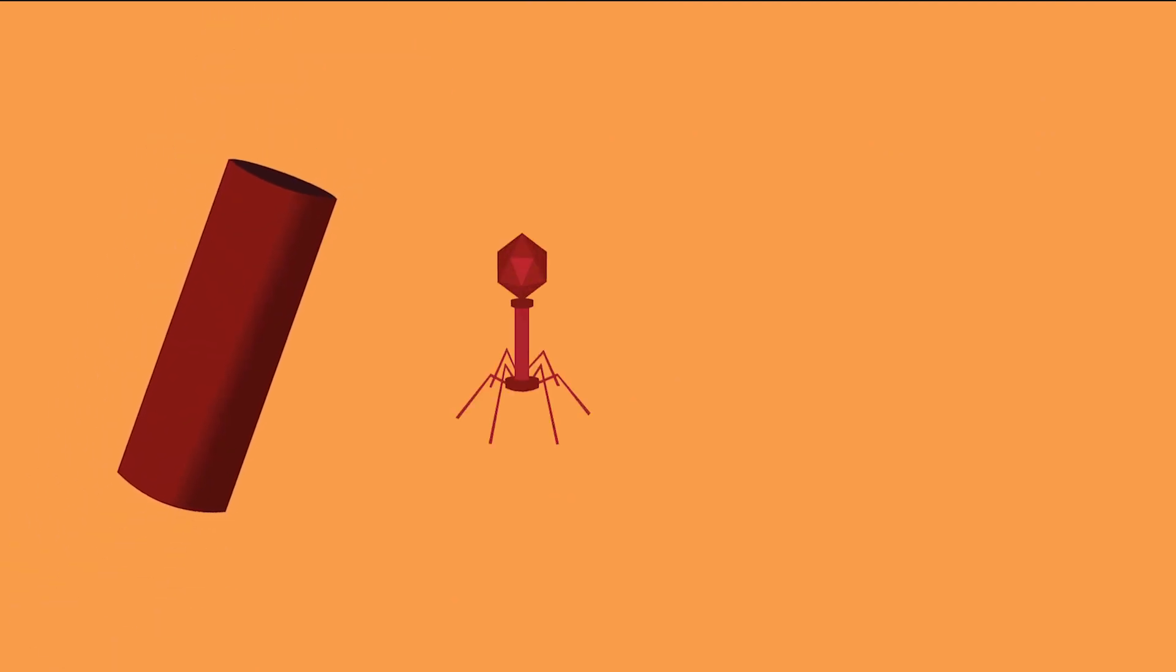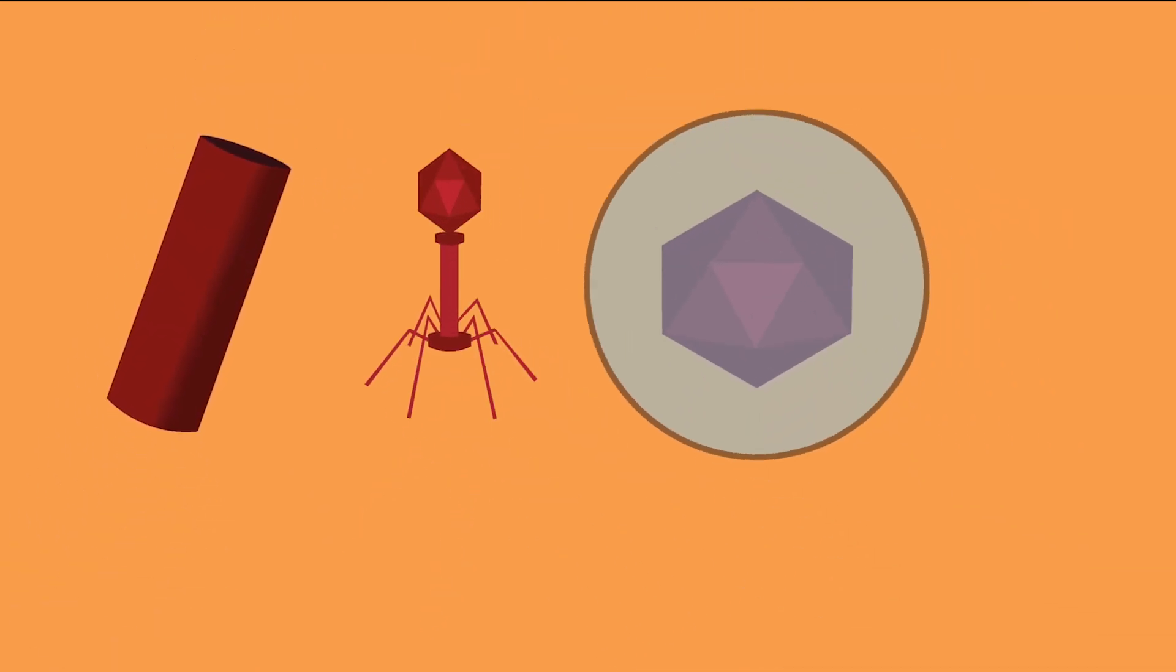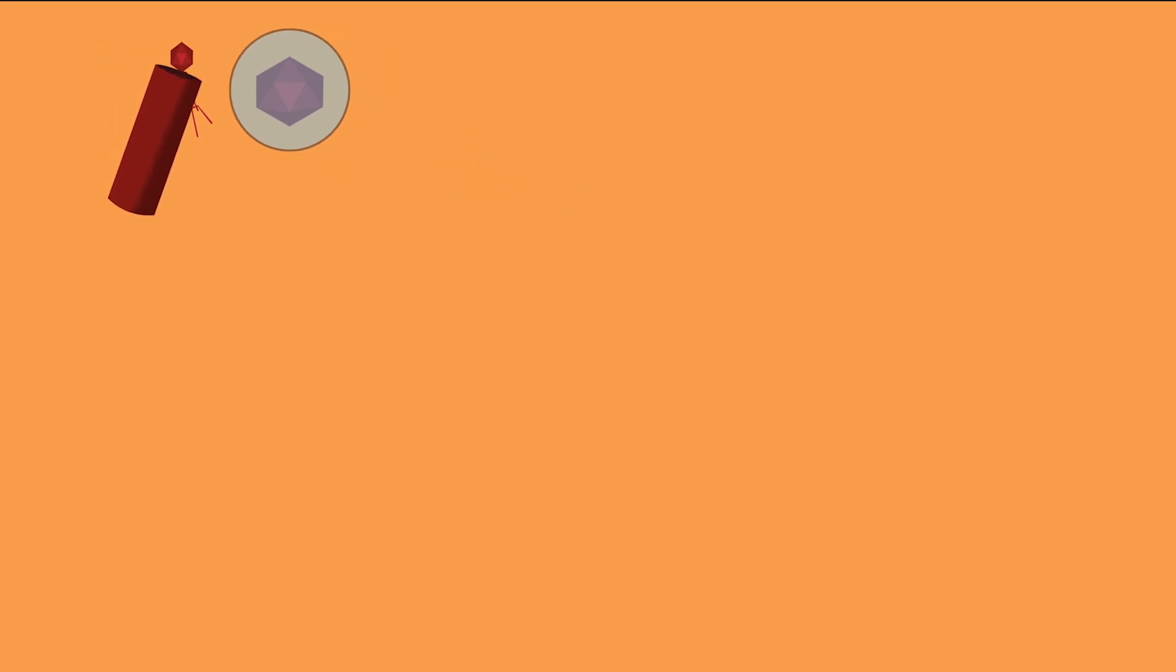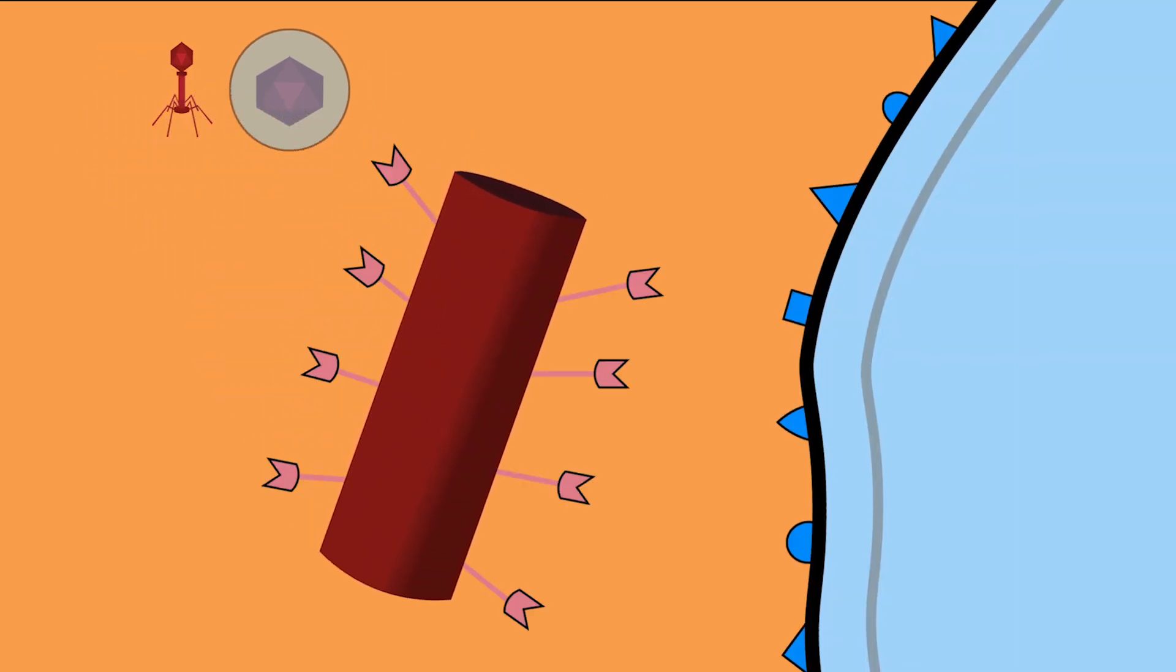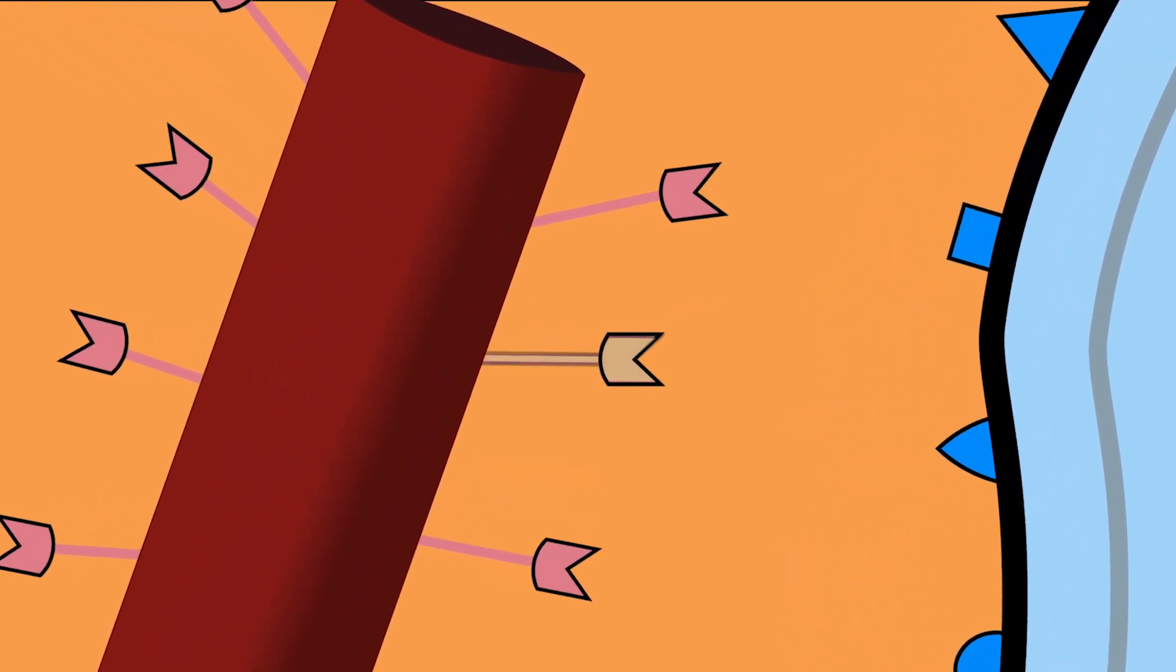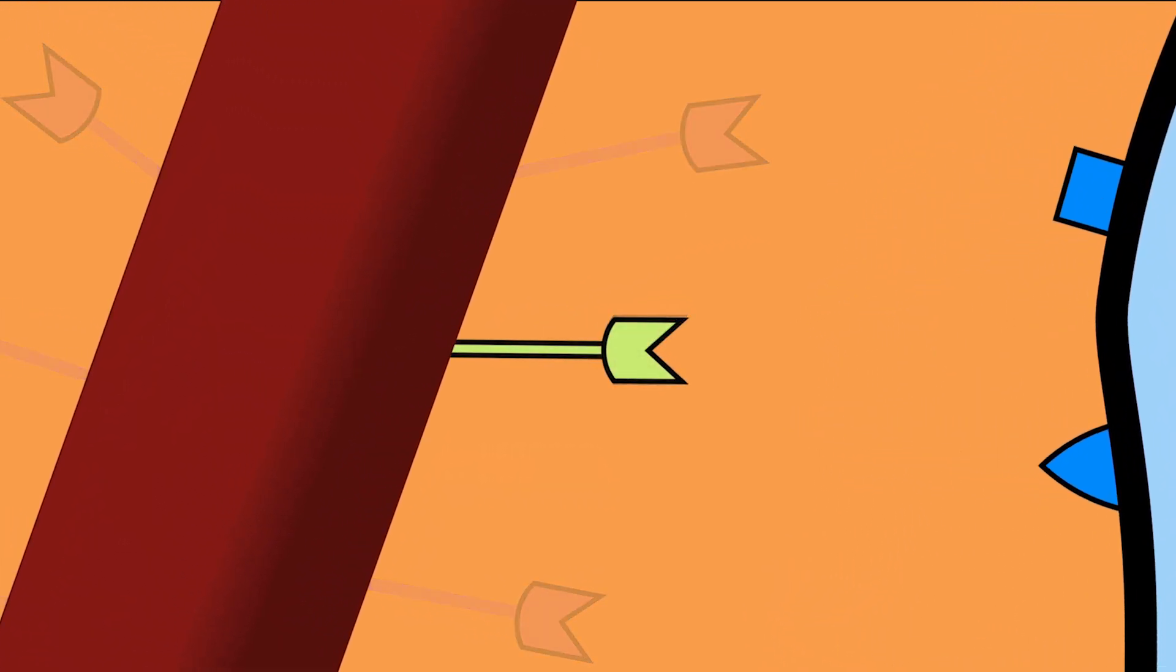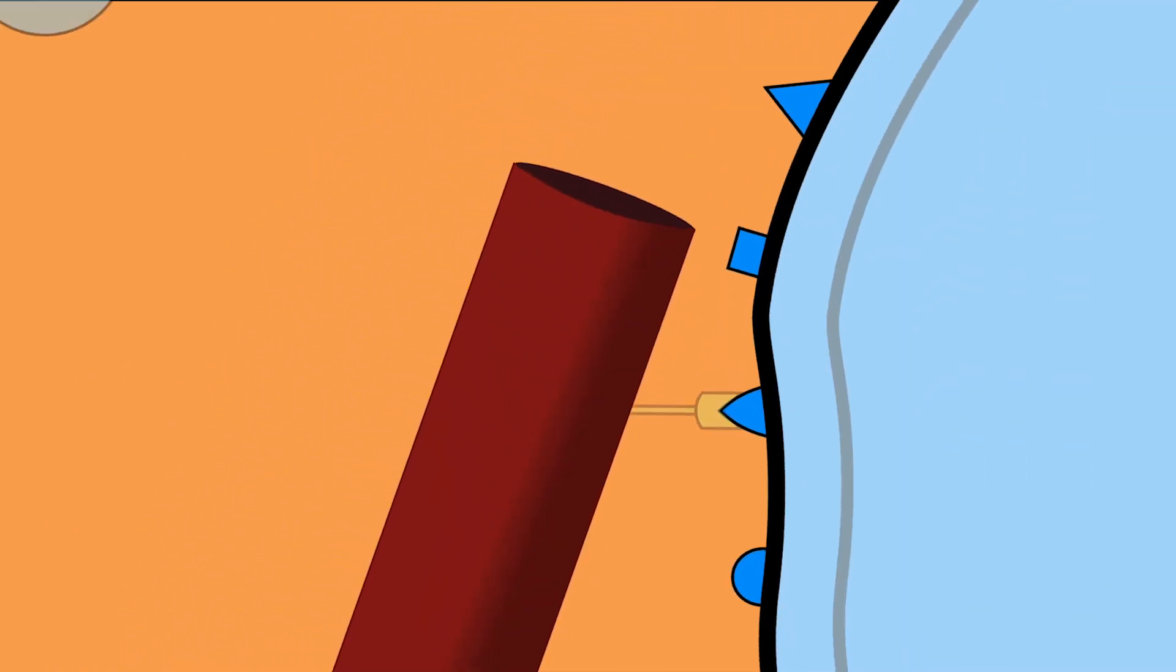The type of virus determines how it gets inside a cell. Some non-enveloped viruses have proteins on their surface that bind to receptors on the outside of cells. Think of the viral surface protein as a key that fits into the lock on the cell's surface. If the protein fits, the cell is unlocked and the virus can enter.